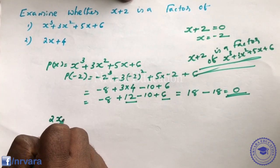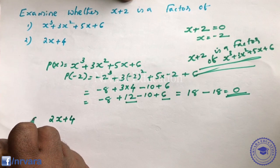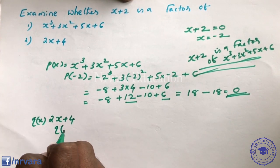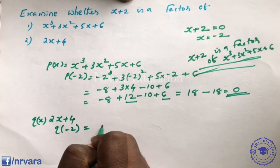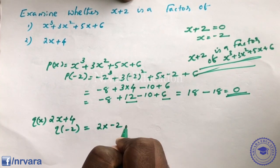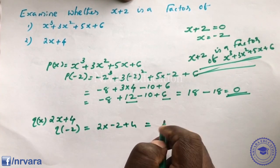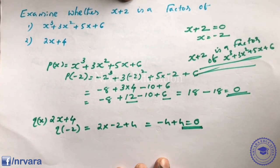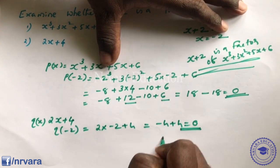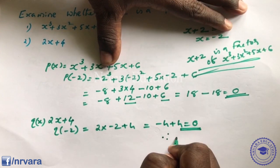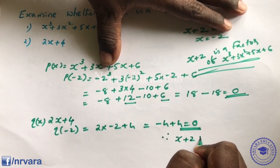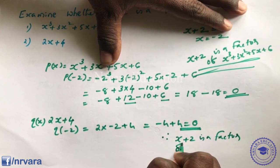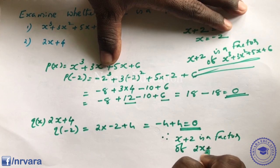For q(x) = 2x + 4, substitute x = -2: 2(-2) + 4 = -4 + 4 = 0. Therefore (x + 2) is a factor of (2x + 4).